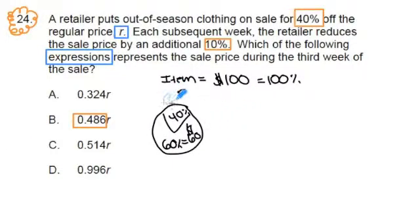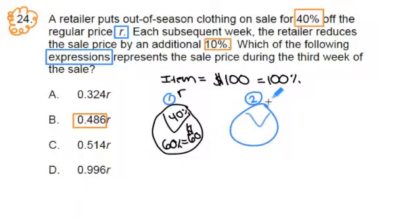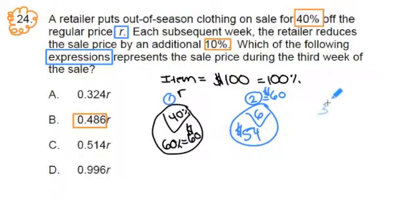On week two, that same shirt is reduced again by 10%. We're starting at $60 now. What's 10% of 60? It's $6. So if I save $6, I'm spending $54. Now, week three — I'm setting this up using visuals as a way to think about part-to-whole relationships, and it's going to make the multiplication a lot easier.